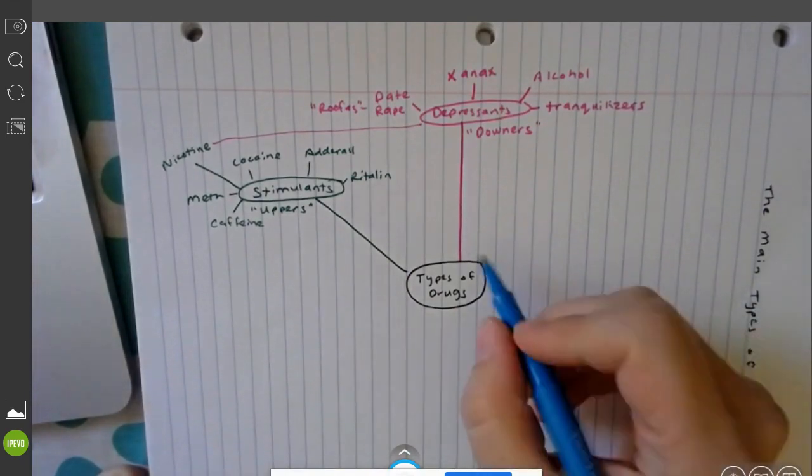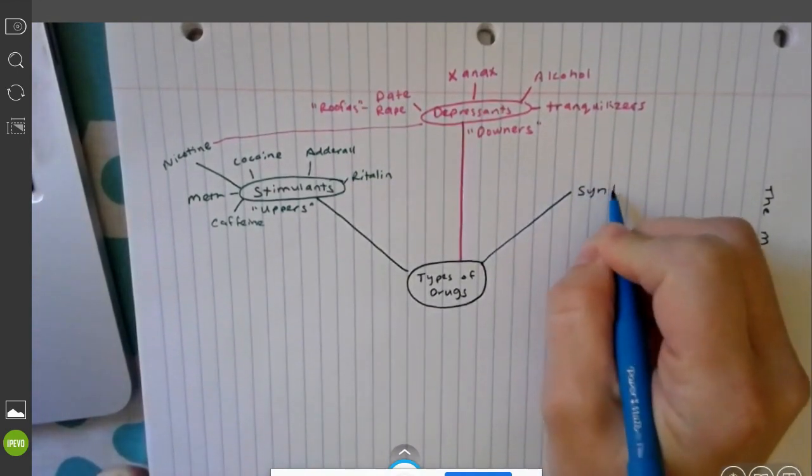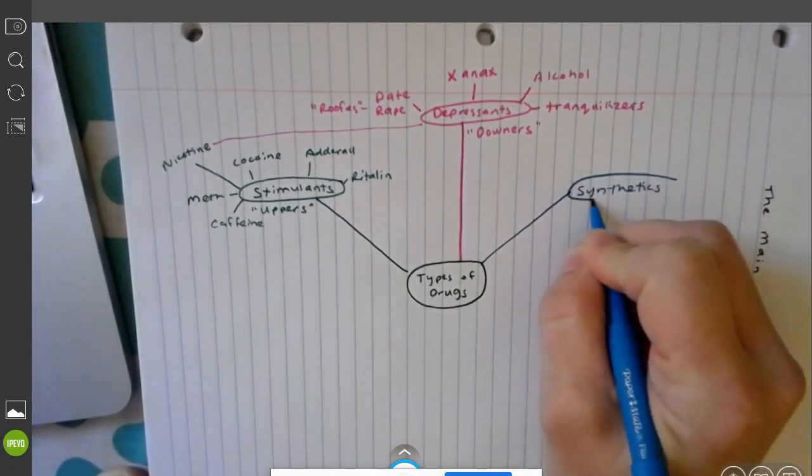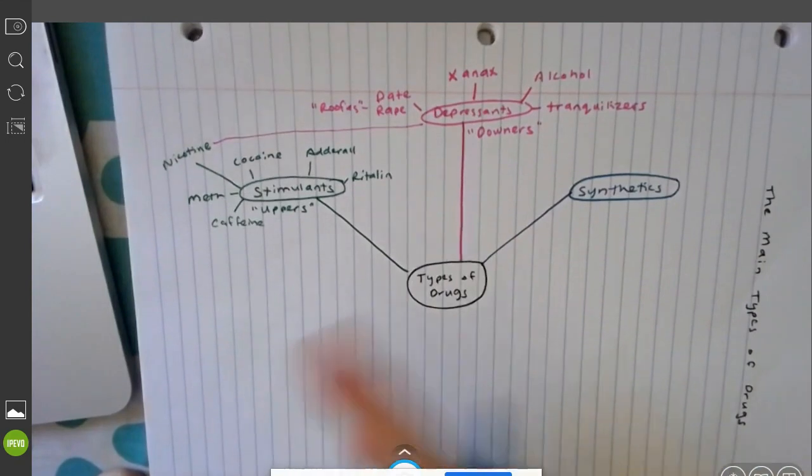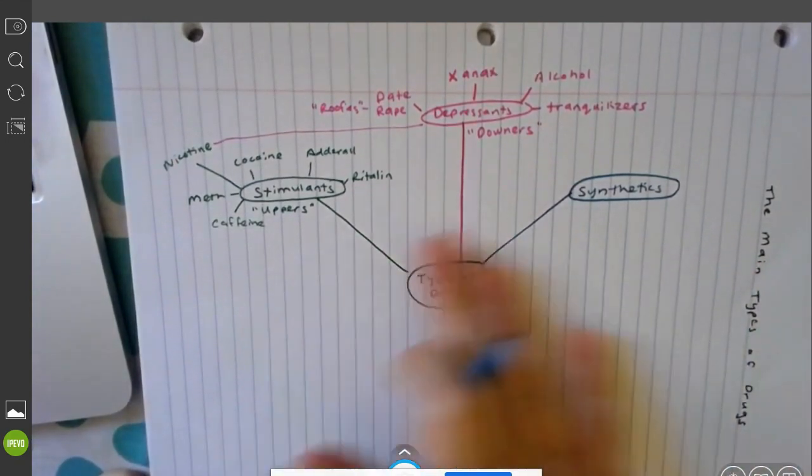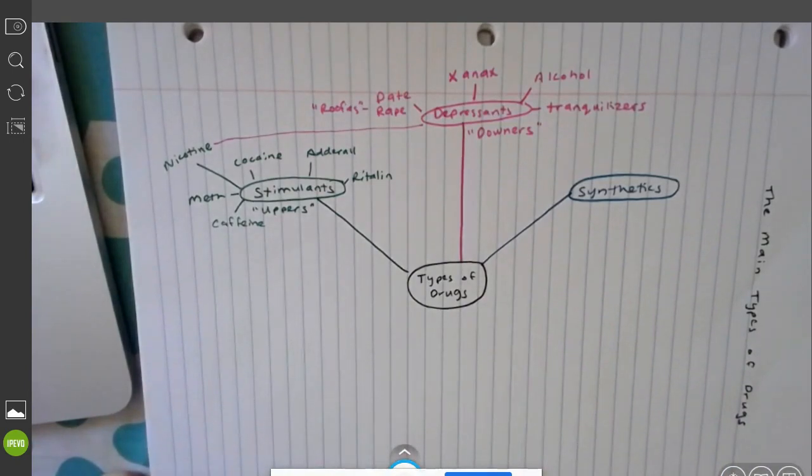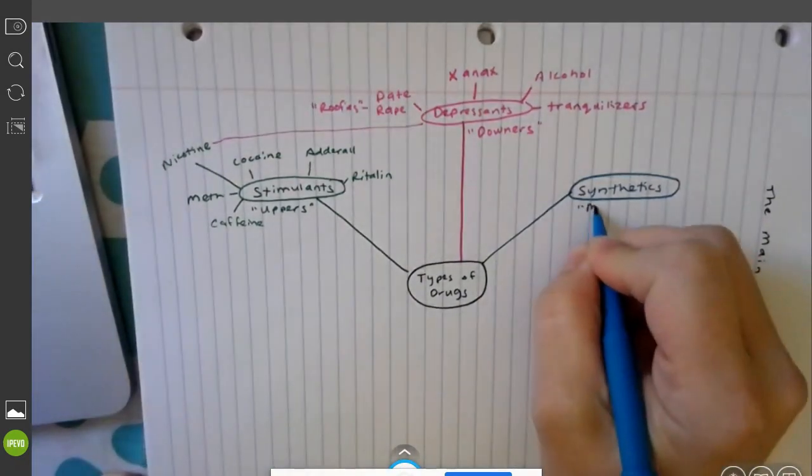Our next category is going to be our synthetics or our man-made drugs. These are things that are not based on the natural substance like marijuana that comes from the cannabis plant. These are going to be made in meth labs and different locations that are highly dangerous, a lot of toxic waste, but they're designed for a certain high.